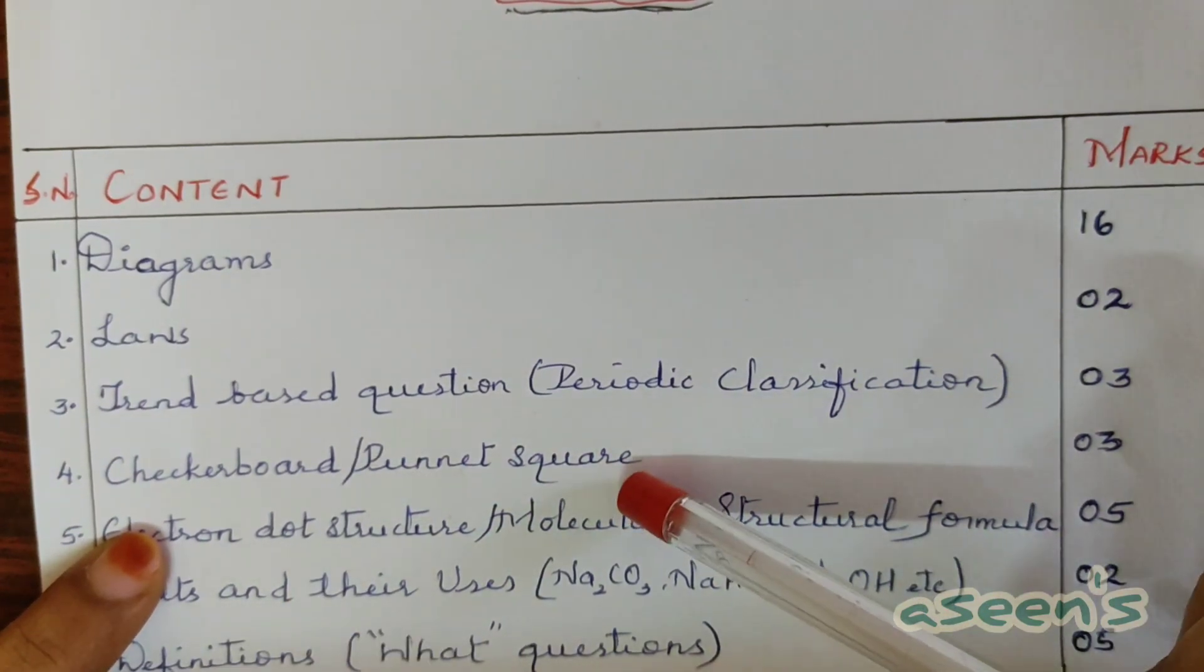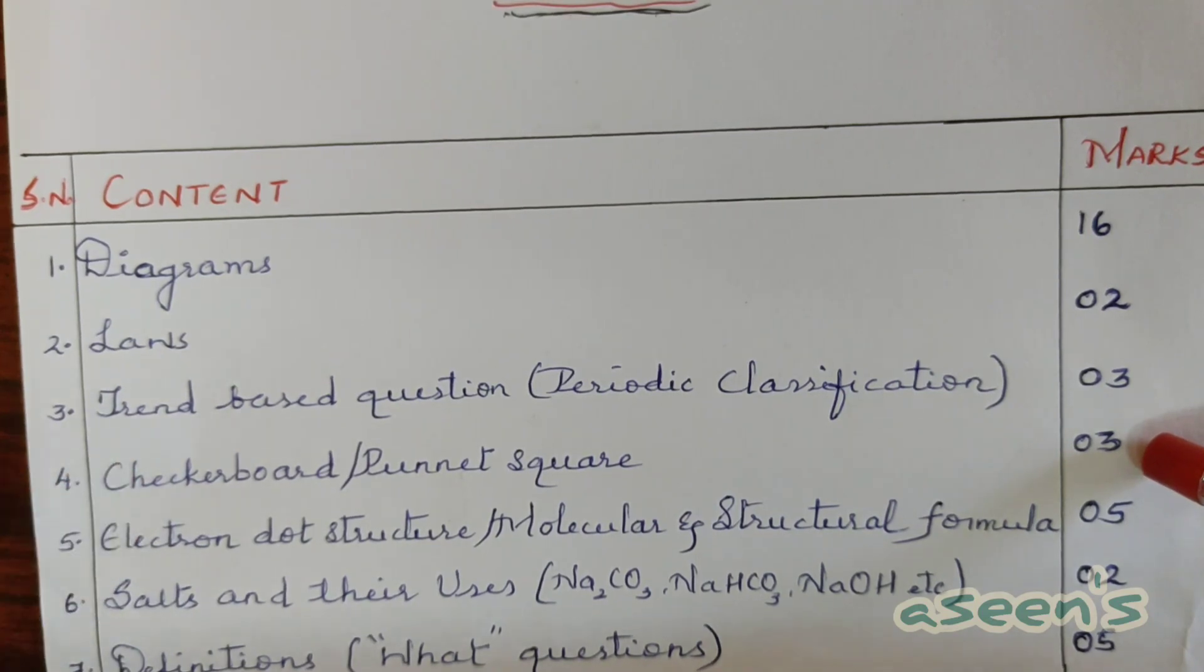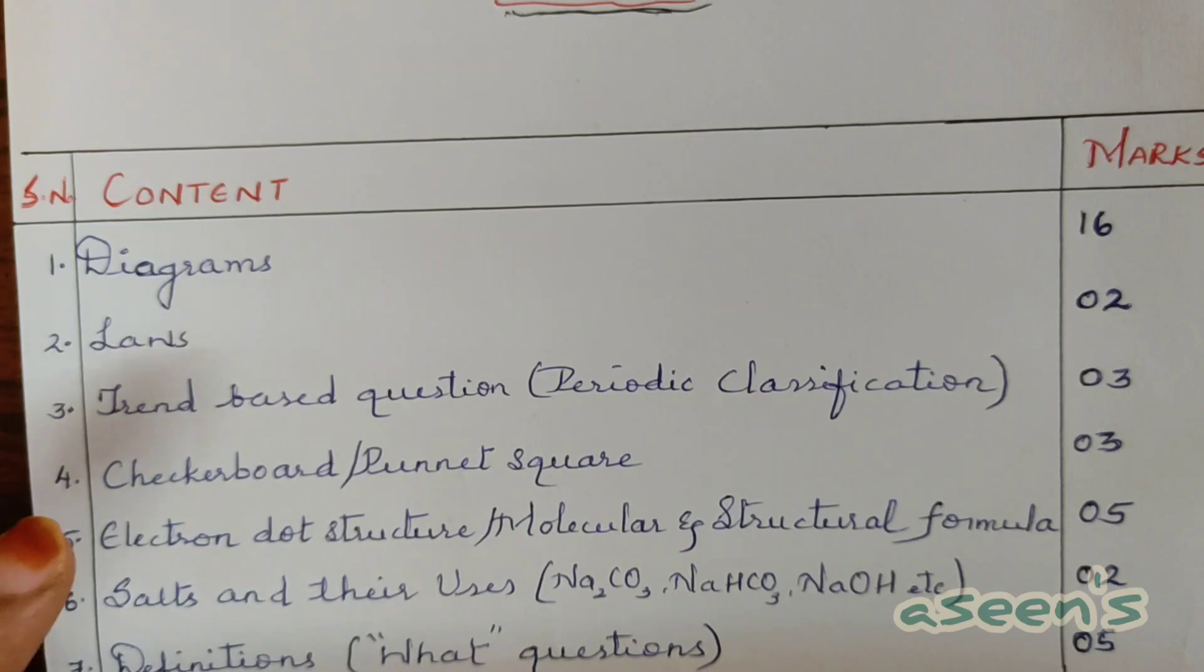Then comes checkerboard or Punnett square for dihybrid as well as monohybrid cross. There are around three marks for this particular concept. You can find the link in the description box on how to solve for any possible given pairs for dihybrid cross and monohybrid cross.